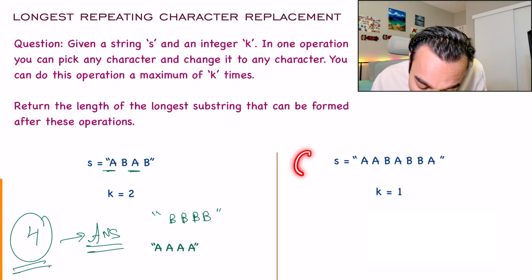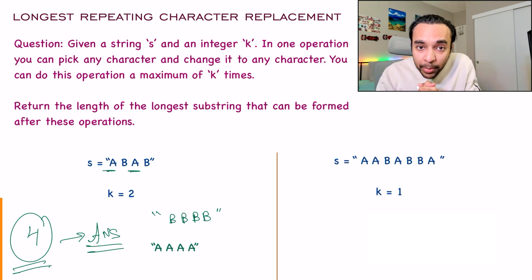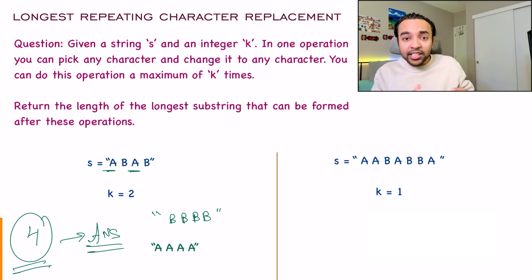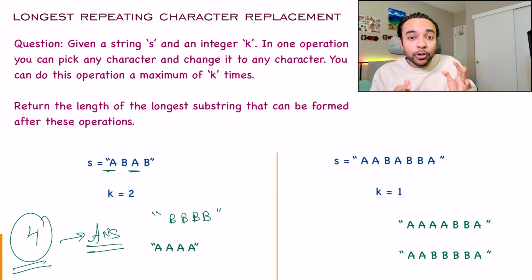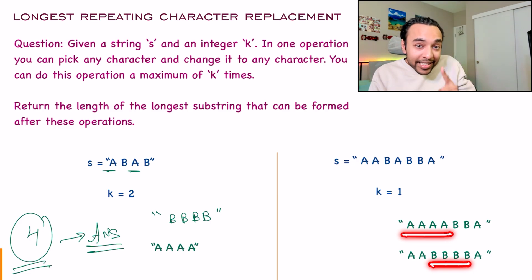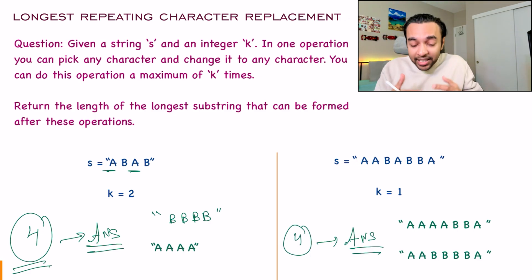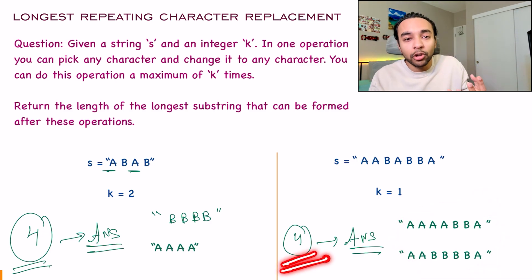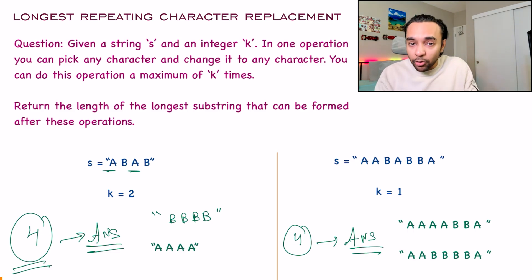Notice there are multiple ways to pick these characters. For example, you could also pick both A's in your operations and form the string as BBB — that is also a valid answer, but the length will still remain the same. You don't have to worry about what the final string becomes; you just need to tell me the longest substring you can make. Similarly, looking at a bigger string with k=1, there are so many choices available. Out of all combinations, the answer is still four. We are only interested in the longest substring length. Feel free to try it on your own, otherwise let's dive into the solution.